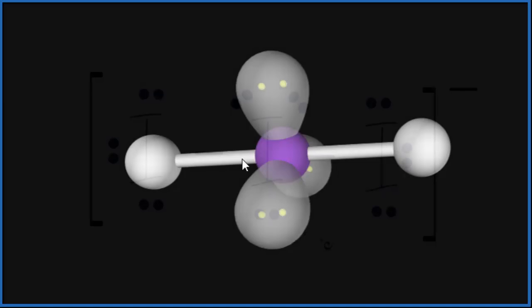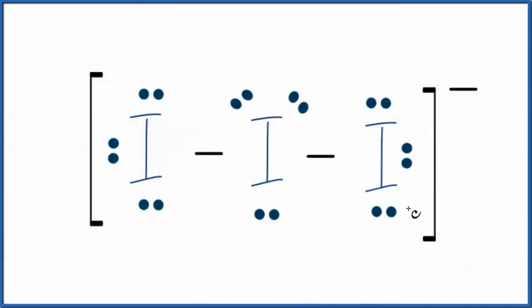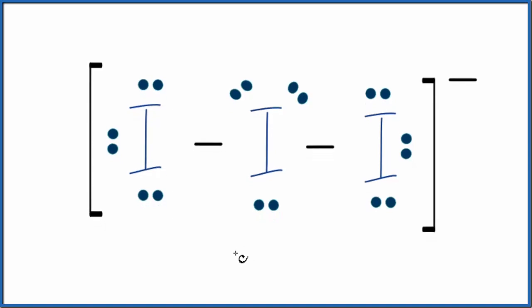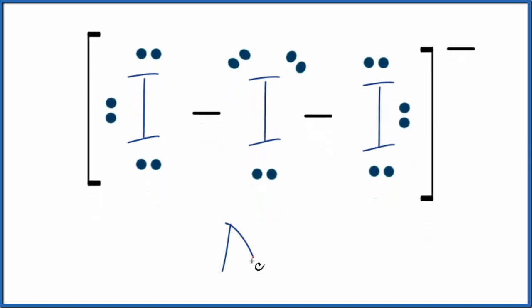If we weren't able to visualize the molecular geometry here for I3 minus, we could use the AXE notation. A, that would be that central iodine atom. Then X, that's the number of atoms bonded to it. We have one, two iodine atoms here.